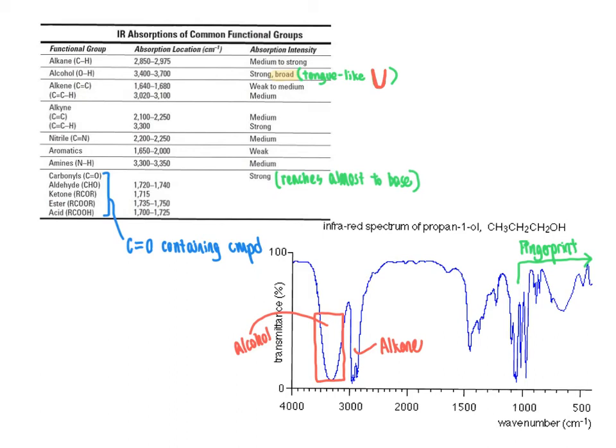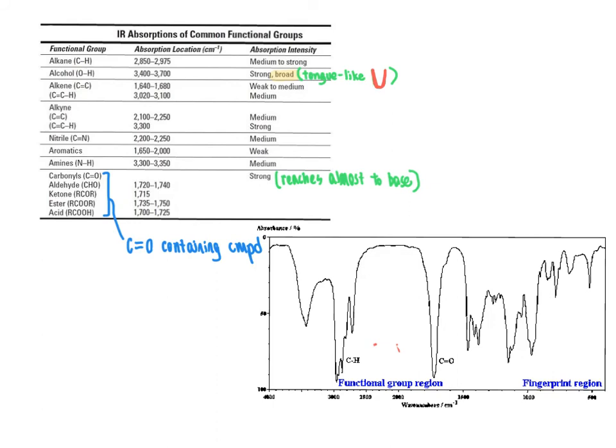Let's take a look at another example to illustrate additional types of functional groups. This is another IR spectrum from your handout. I've highlighted the fingerprint region, which we can compare to a standard to determine whether our unknown compound has the same structure. The other region is our functional group region, which is more important if we are trying to identify an unknown molecule from scratch.